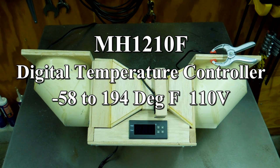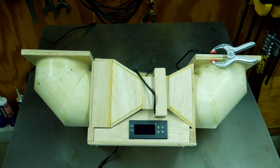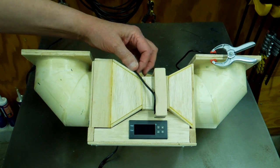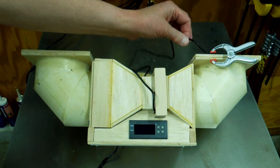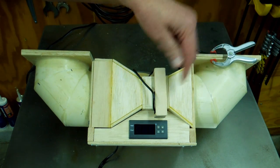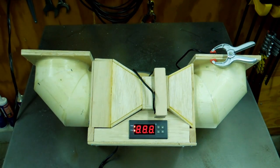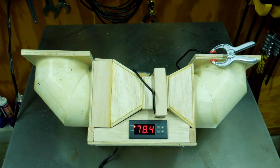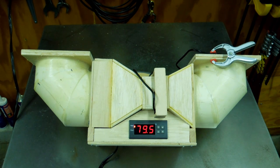This is a MH1210F temperature controller. These are readily available out of Hong Kong or China, but they're usually Celsius. There is somebody in California who's selling this for 110 volt and it's in Fahrenheit. This wire comes over here to the temperature probe, and I have this clamp just holding this temperature probe on the exhaust side of this assembly. I plug it in. The fan is on, and this is set to go to 115 degrees.